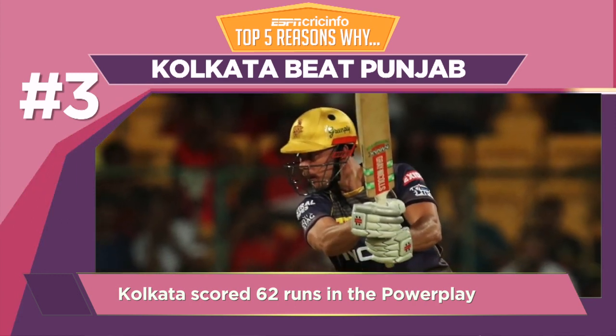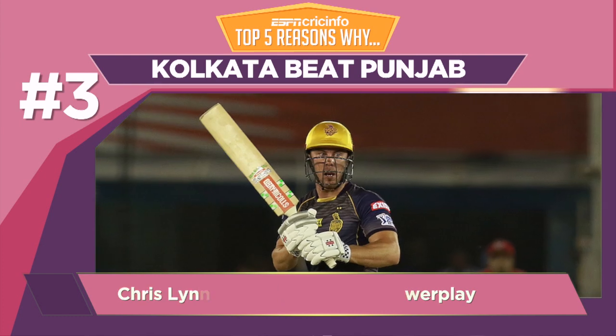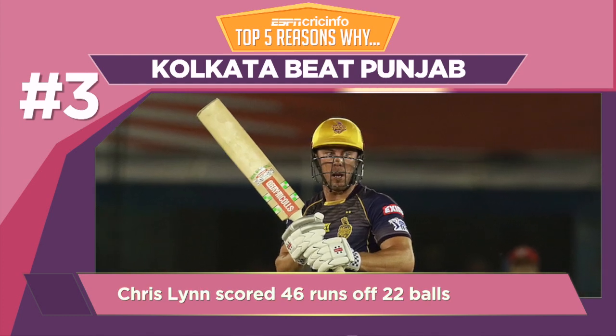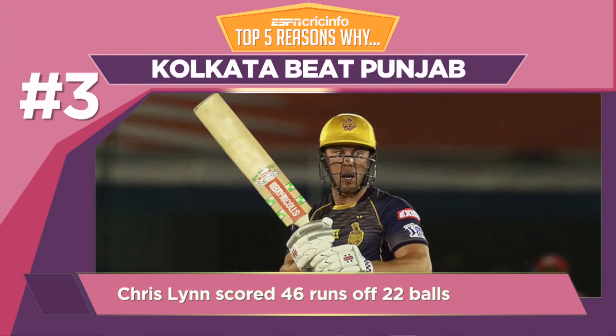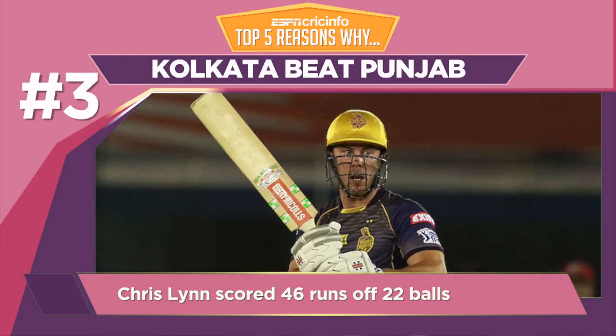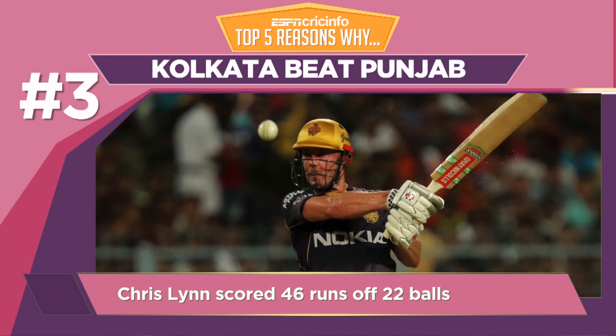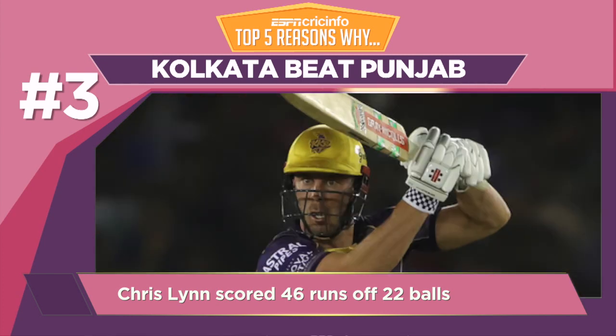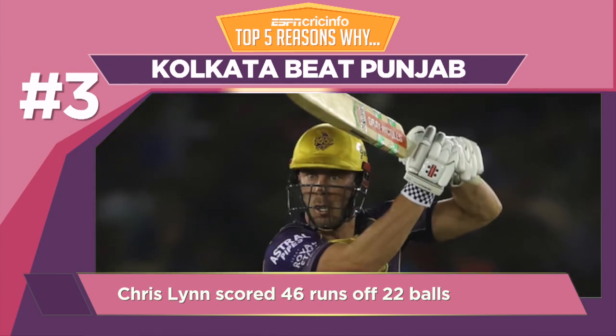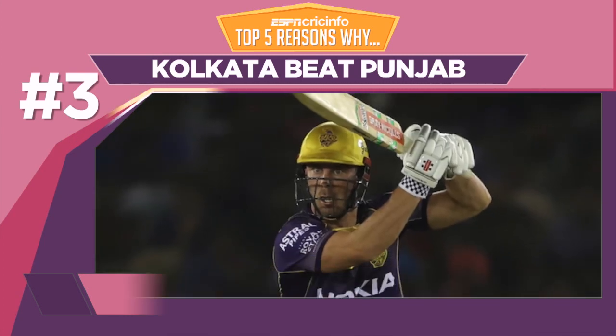He scored 38 of his 46 runs in boundaries and ended with a strike rate of over 200. By the time he was dismissed on the last ball of the power play, Kolkata had raced away to 62.